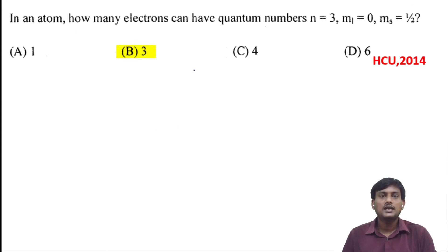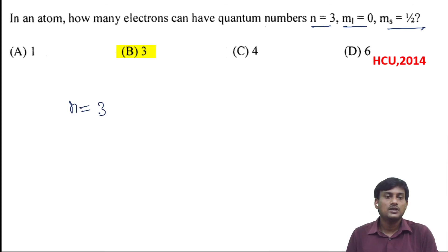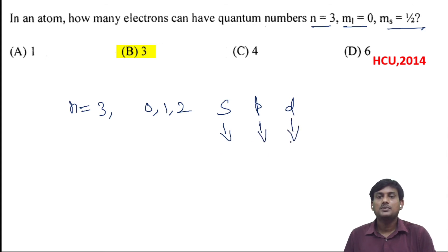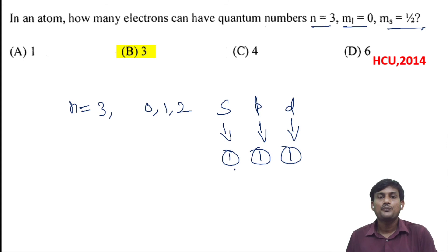Next question: in an atom, how many electrons can have quantum numbers n = 3, ml = 0, ms = +1/2? When n = 3, the possible l values are 0, 1, and 2, meaning s, p, and d orbitals are possible. In each of these orbitals, ml = 0 is possible, and each can hold one electron with ms = +1/2. So the total number of electrons is 3.